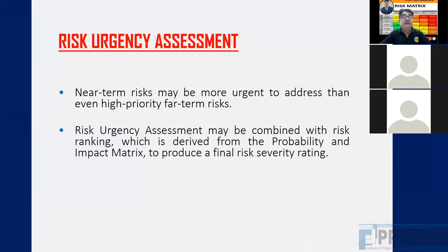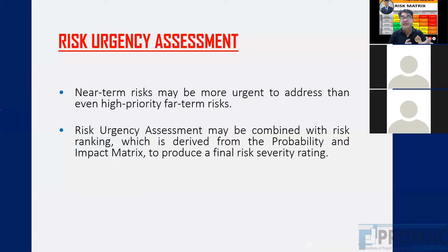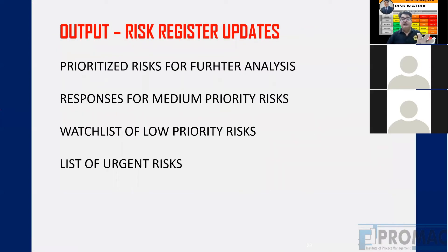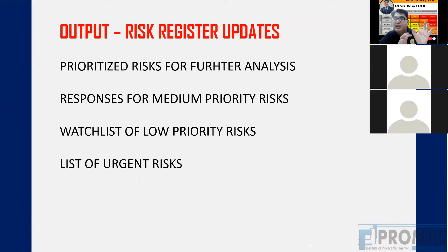After qualitative analysis, we move to quantitative risk analysis, where we get exact numbers — for example, because of this risk my project will be delayed by seven days, or there is a 50% probability that this risk will delay the project by 20 days. From qualitative analysis we get: prioritized risks to take for numerical analysis, responses for medium-priority risks, a watch list for low-priority risks, and a list of urgent risks. Numerical analysis tells us exactly how much extra cost to keep in the cost baseline and how much to adjust the schedule baseline.